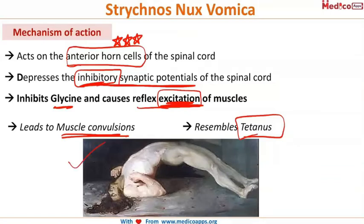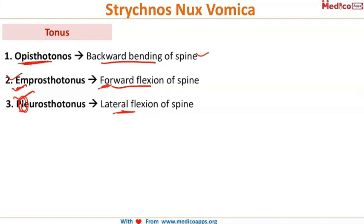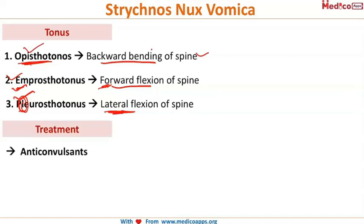The presentation resembles tetanus. The posture is known as tonus. When there is backward bending of the spine it is called opisthotonos; forward flexion is called emprosthotonos; and lateral flexion is pleurosthotonos. As a memory aid: 'e' is followed by 'f' so emprosthotonos is forward flexion; pleurosthotonos has 'l' for lateral; and opisthotonos is backward bending.